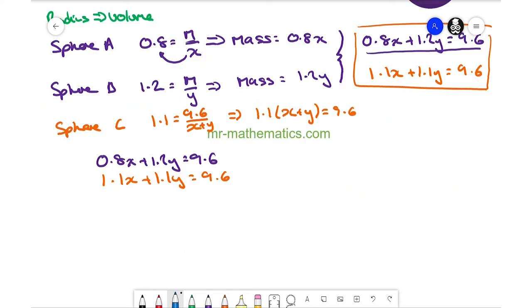To solve them simultaneously, I only need the value of Y, which is the volume of sphere B. I'm going to eliminate X by dividing the first equation by 0.8, because 0.8 divided by itself makes 1. So we have X plus 1.5Y equals 12.